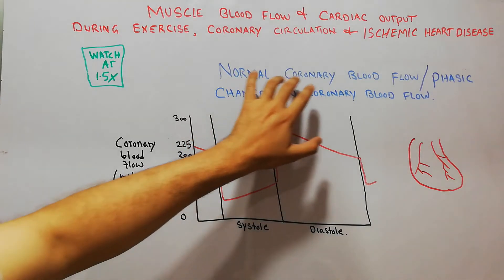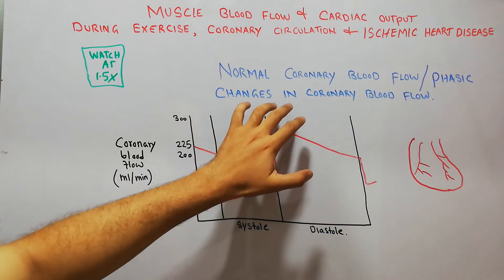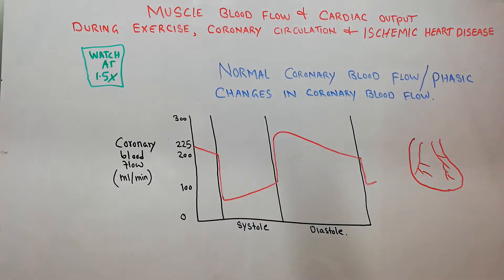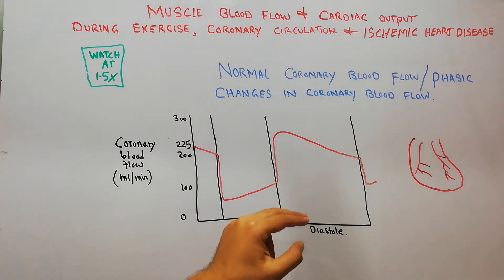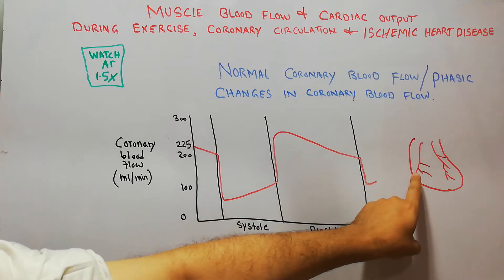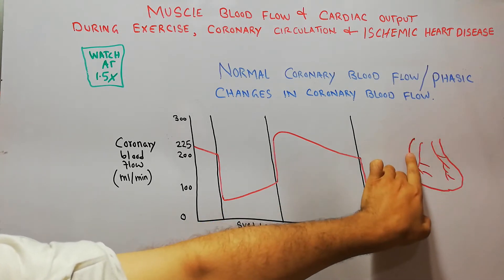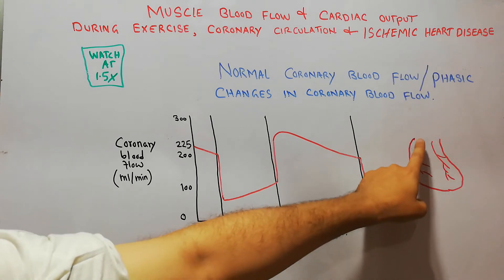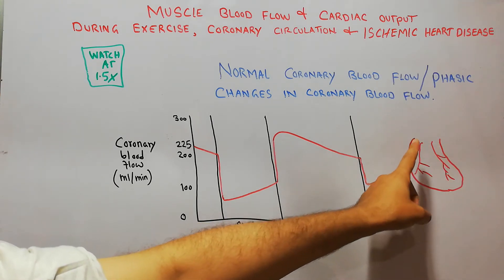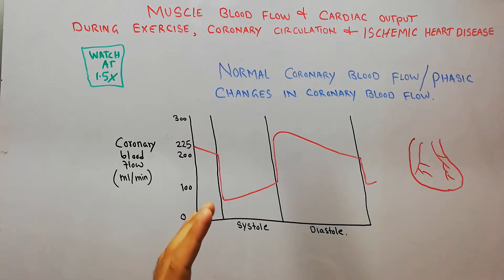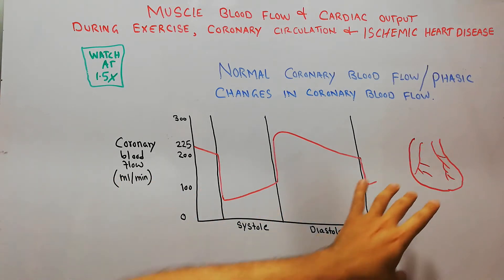Today in this lecture we are going to discuss the normal coronary blood flow and phasic changes that occur in coronary blood flow during systole and diastole. In our last lecture we discussed that the main arteries supplying blood to the heart are the right coronary artery and the left coronary artery. Here we have the heart — the right coronary artery is supplying blood to most of the right side, and the left coronary artery is supplying blood to the left side.